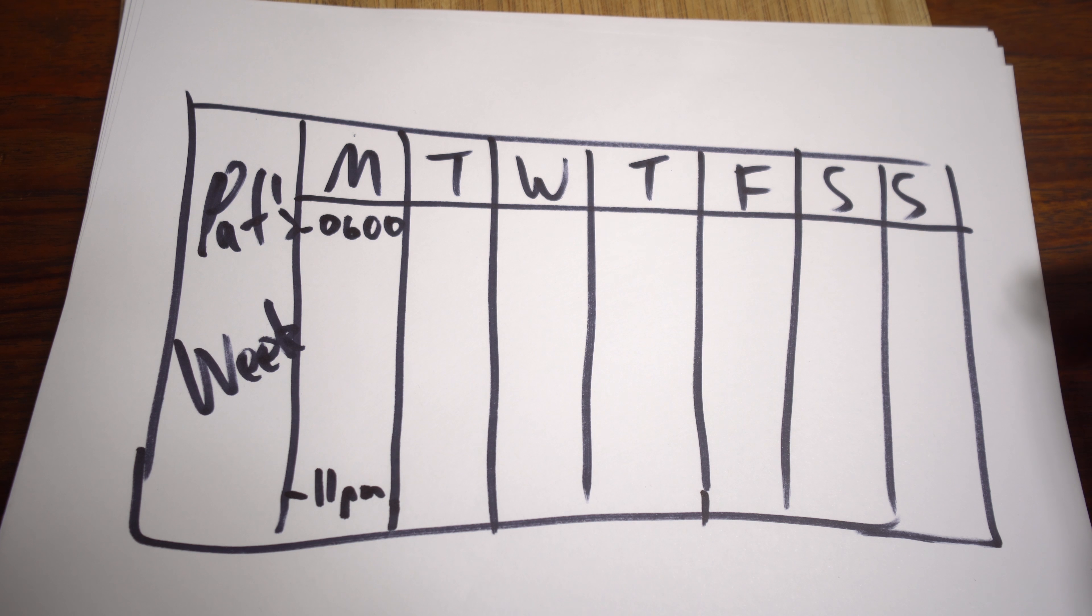So here we have a normal week, Monday to Sunday. This is Pat's normal week. Every day begins at about 6 in the morning and finishes at about 11, 12, or 1 in the morning.